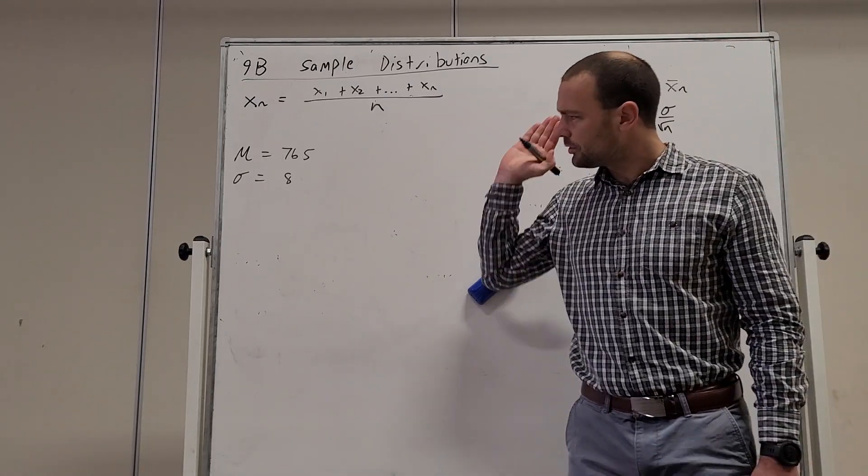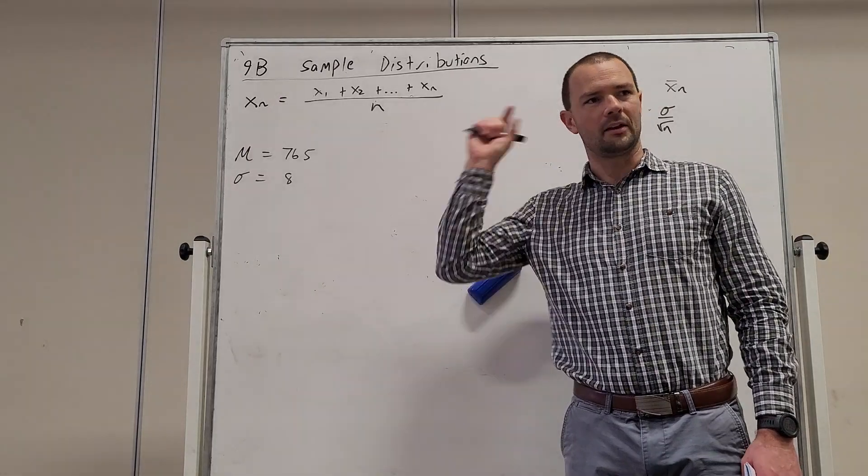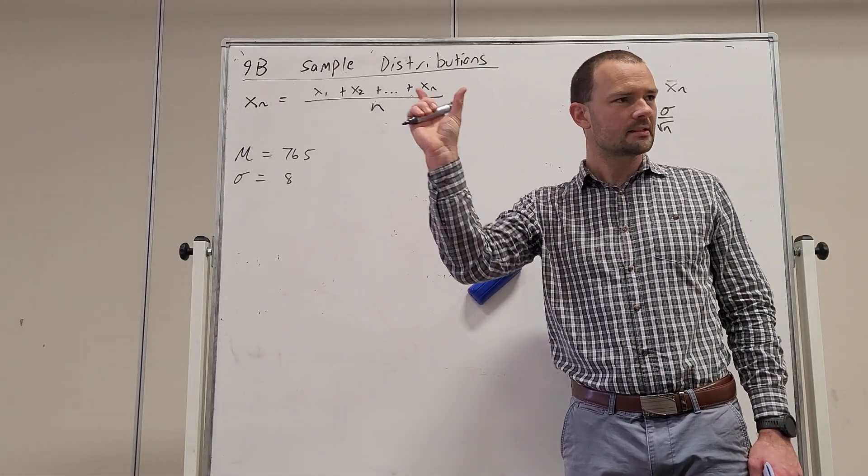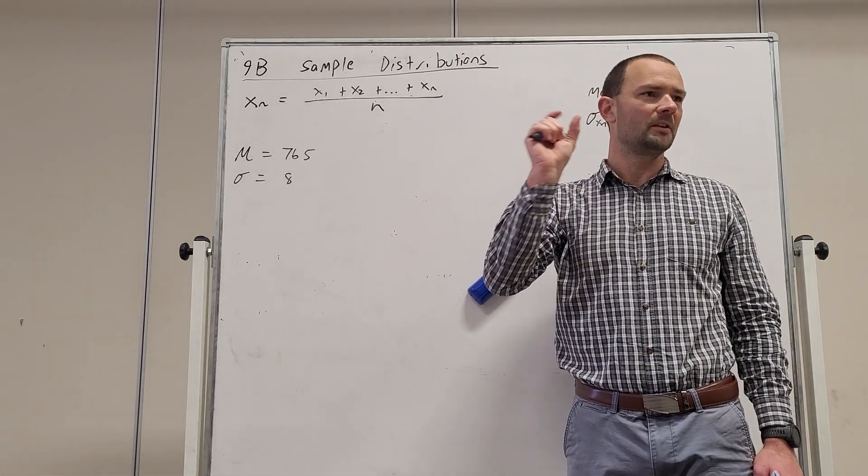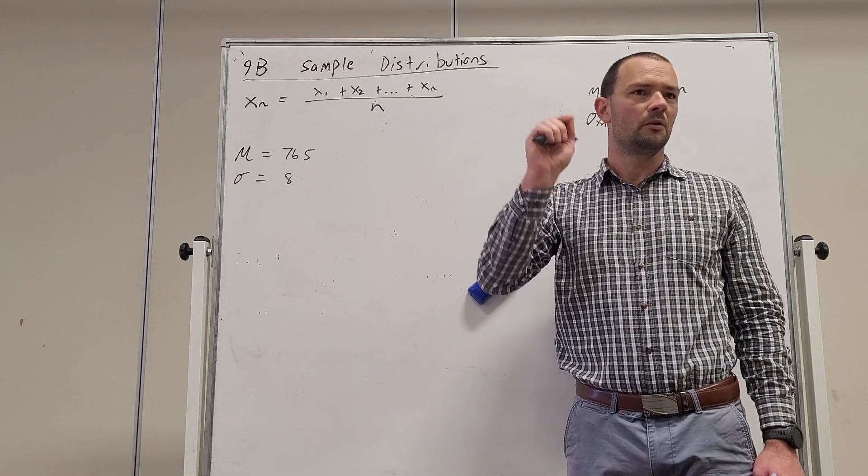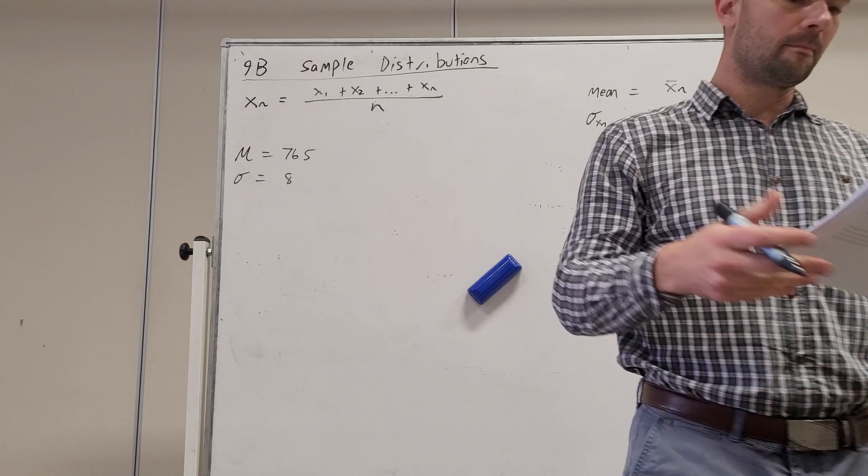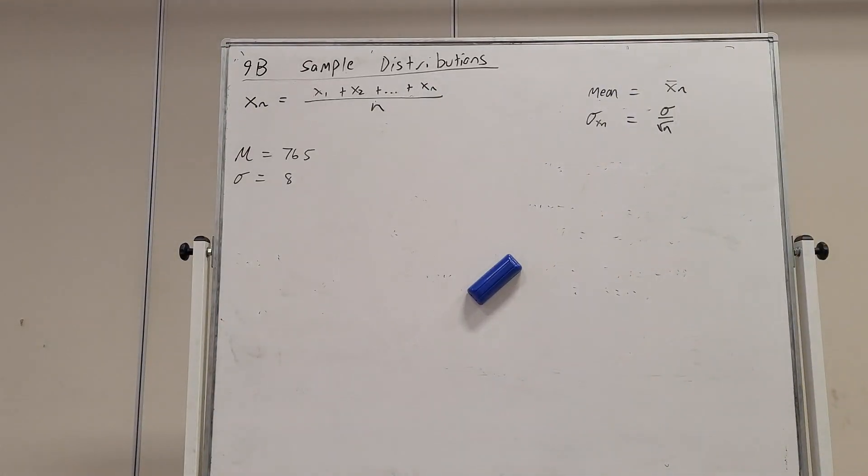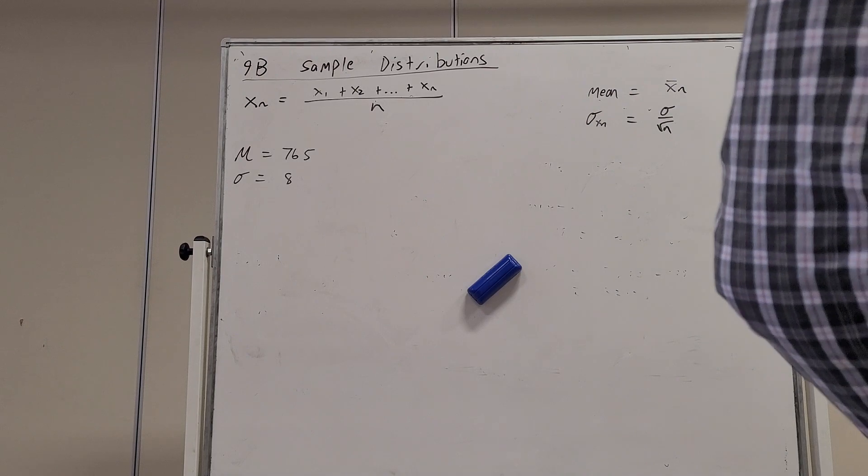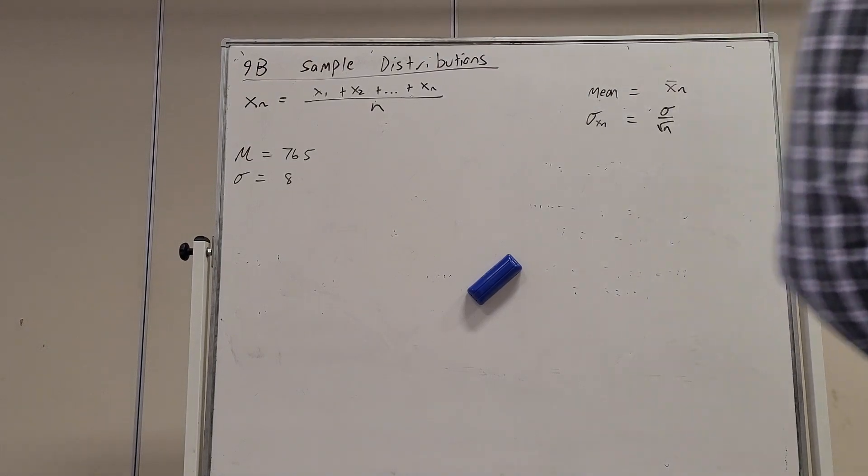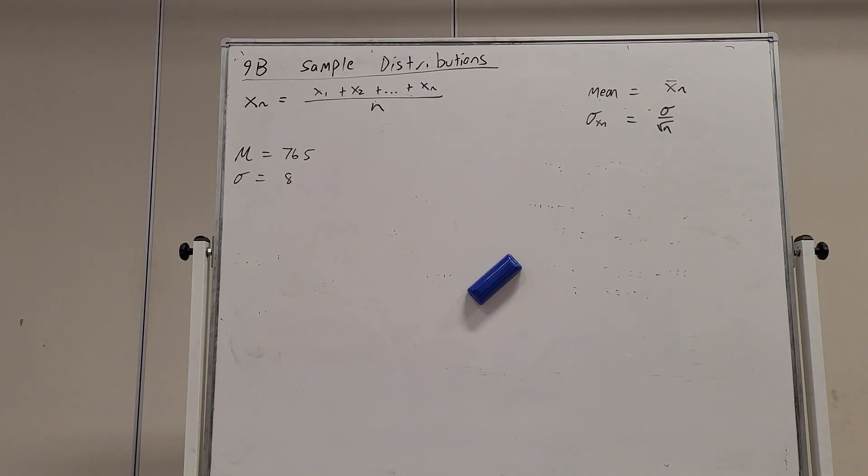And when we know the mean of the distribution, it always takes precedence over the mean of the observations. So the mean of the distribution, if it's known, it trumps the mean of the observations. And then as the number of observations increases, the observed average is going to get closer and closer to the known mean.